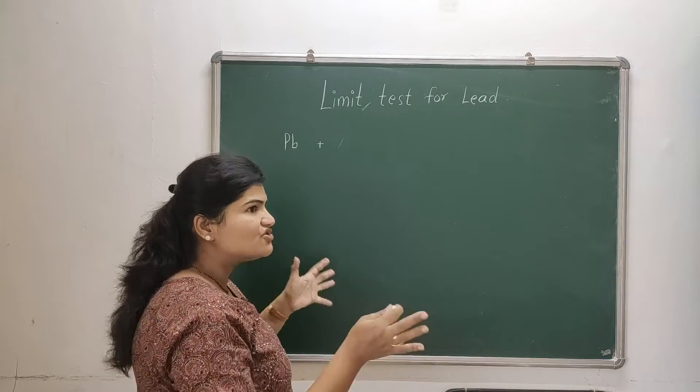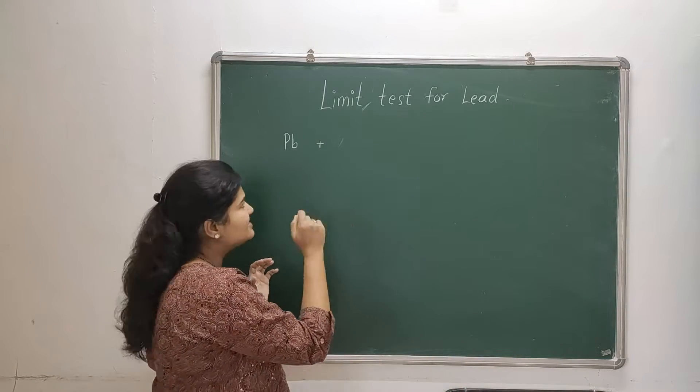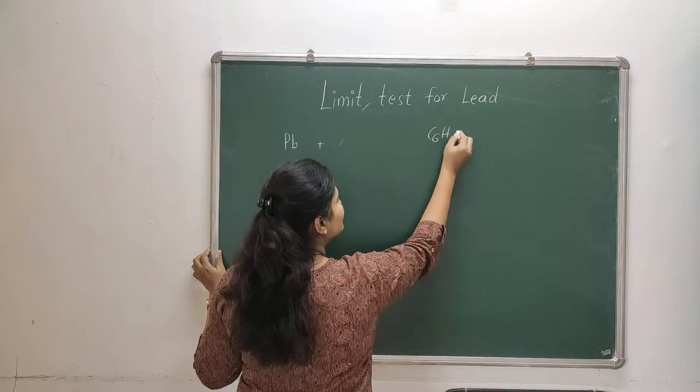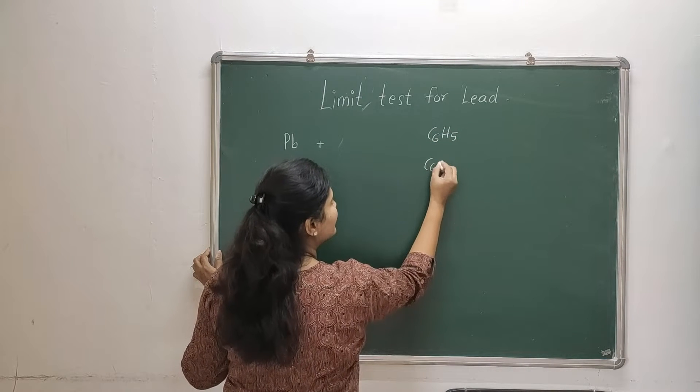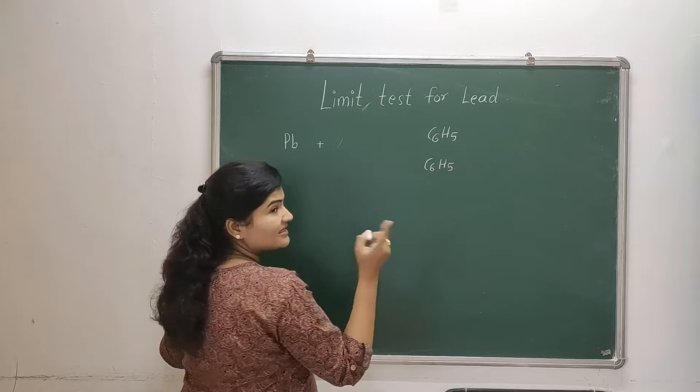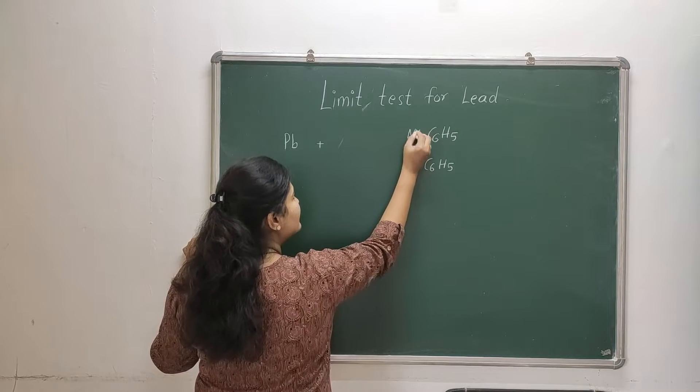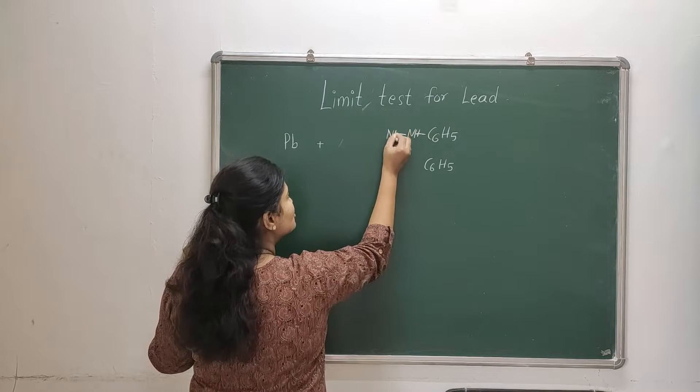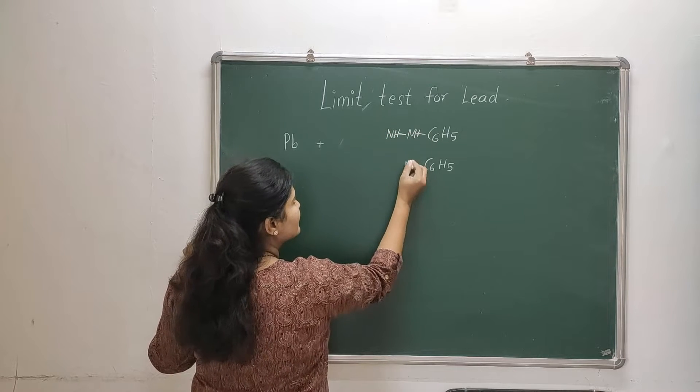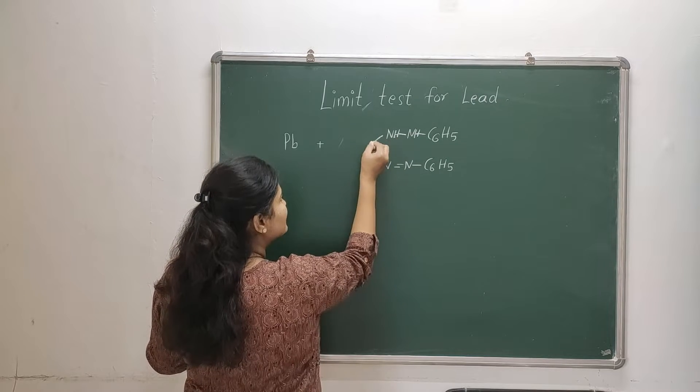So what is the structure of this reagent? First let's discuss diphenyl - there are going to be two phenyl groups. These phenyl groups are attached to carbazone portion like this: N double bond N, this will be attached to carbon.